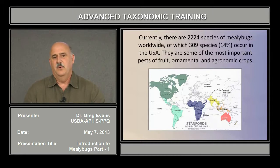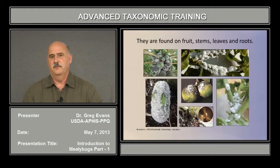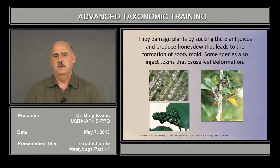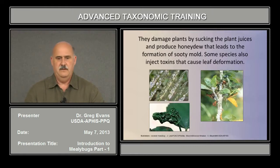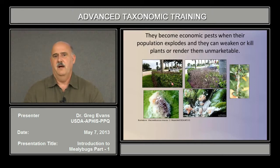They are some of the most important pests of fruit, ornamental, and agronomic crops. You can find them on fruits, stems, leaves, and even on roots. They damage plants by sucking the plant juices and also produce honeydew that leads to the formation of sooty mold. Some species also inject toxins that cause leaf deformation.